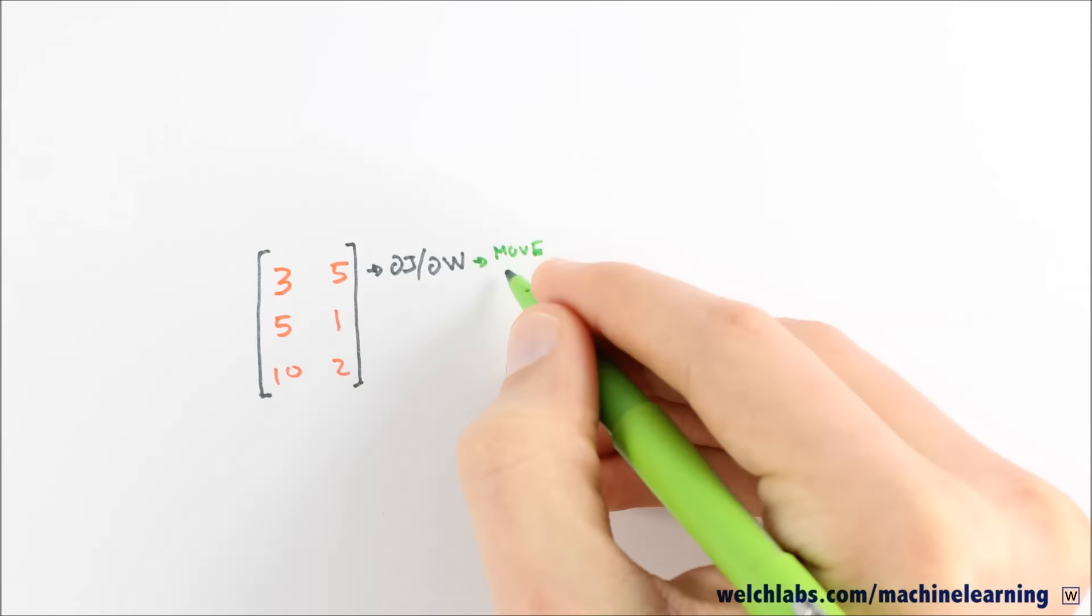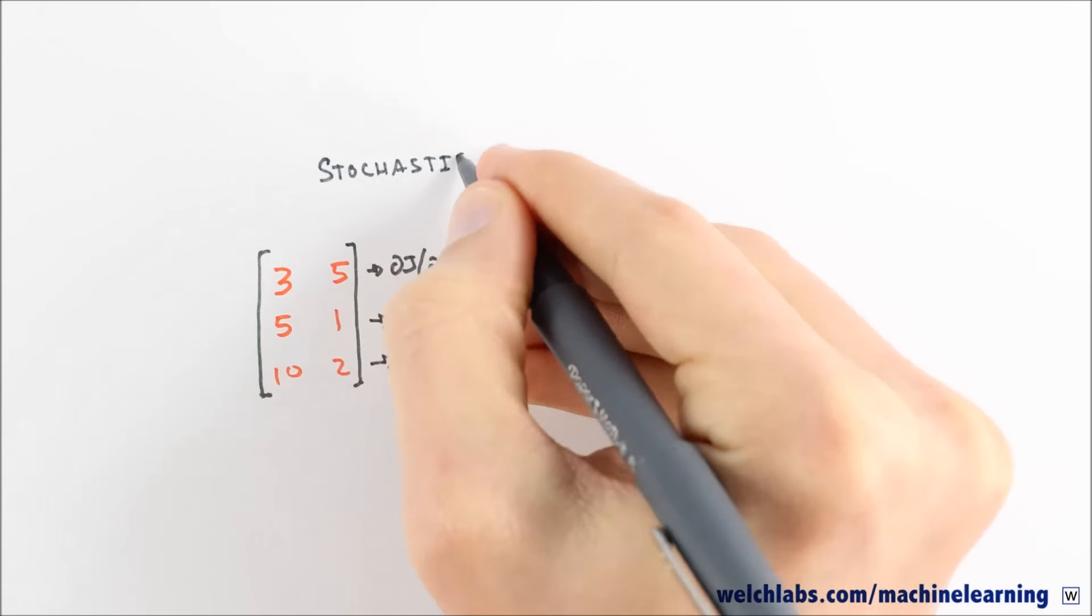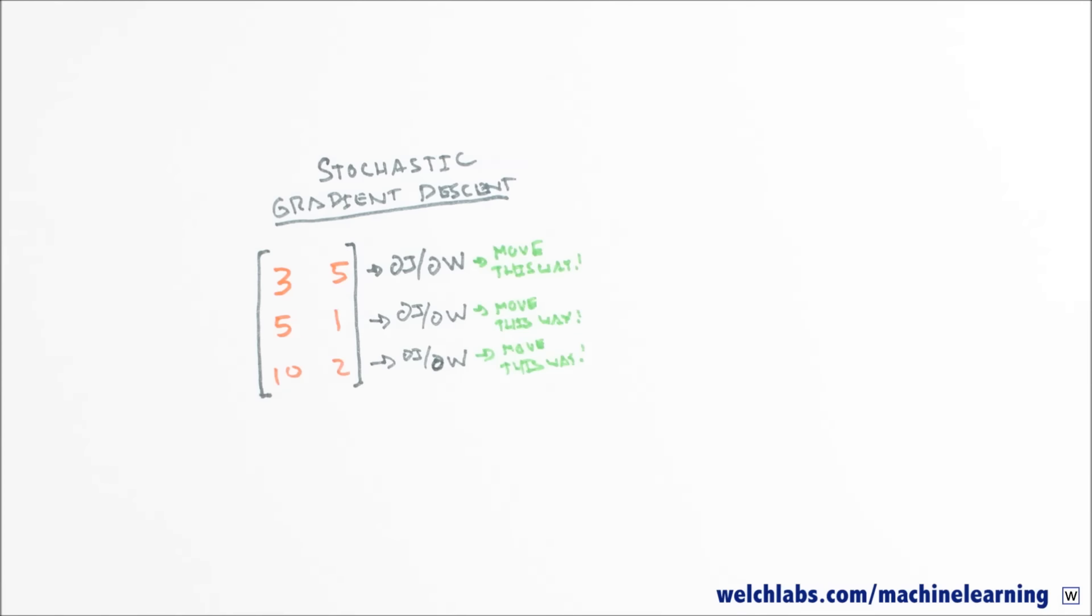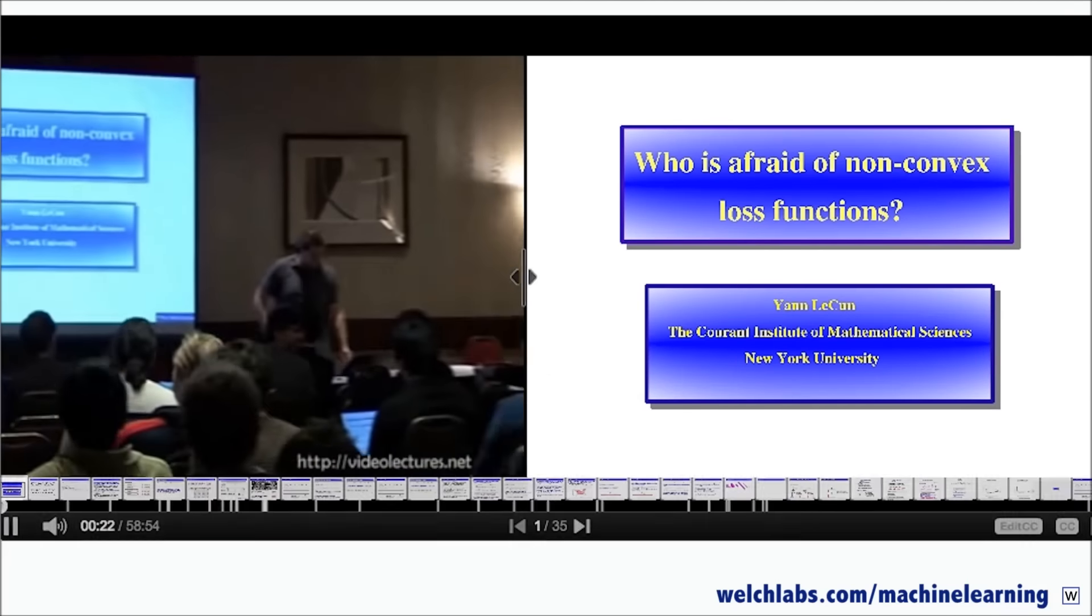Another piece of the puzzle here is that depending on how we use our data, it might not matter if our function is convex or not. If we use our examples one at a time, instead of all at once, sometimes it won't matter if our function is convex. We will still find a good solution. This is called stochastic gradient descent. So maybe we shouldn't be afraid of non-convex loss functions, as neural network wizard Yann LeCun says in his excellent talk, Who is Afraid of Non-Convex Loss Functions?